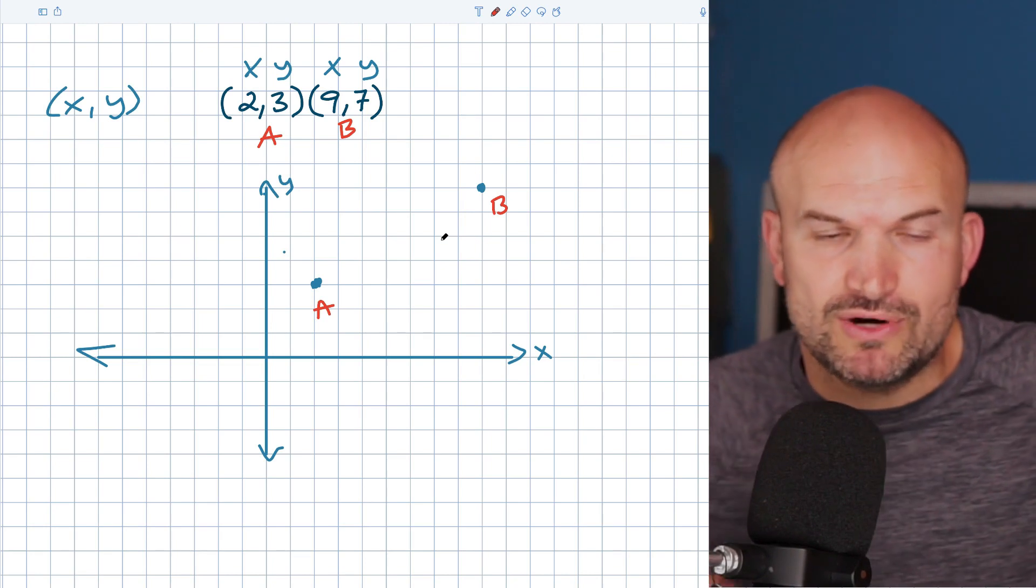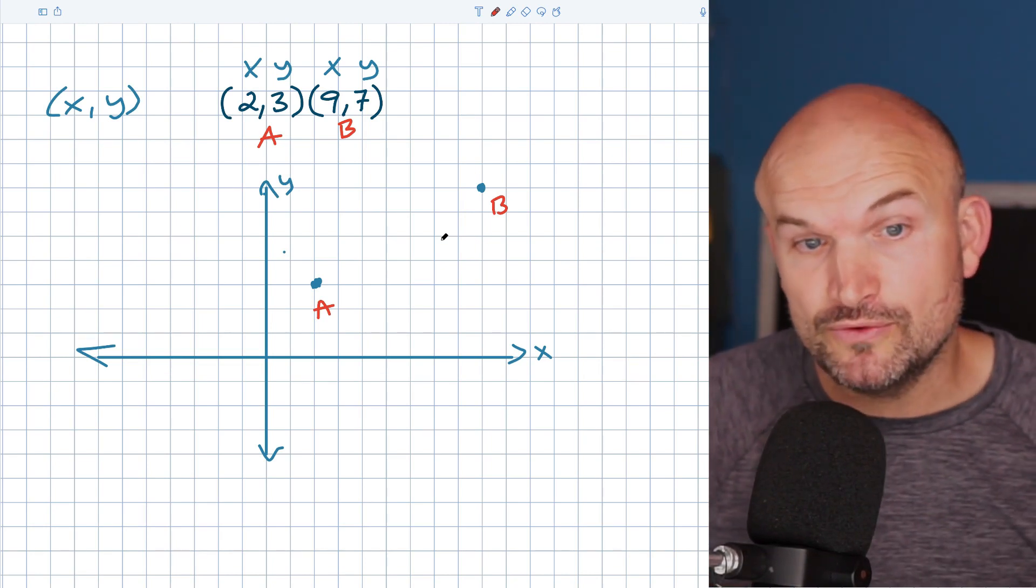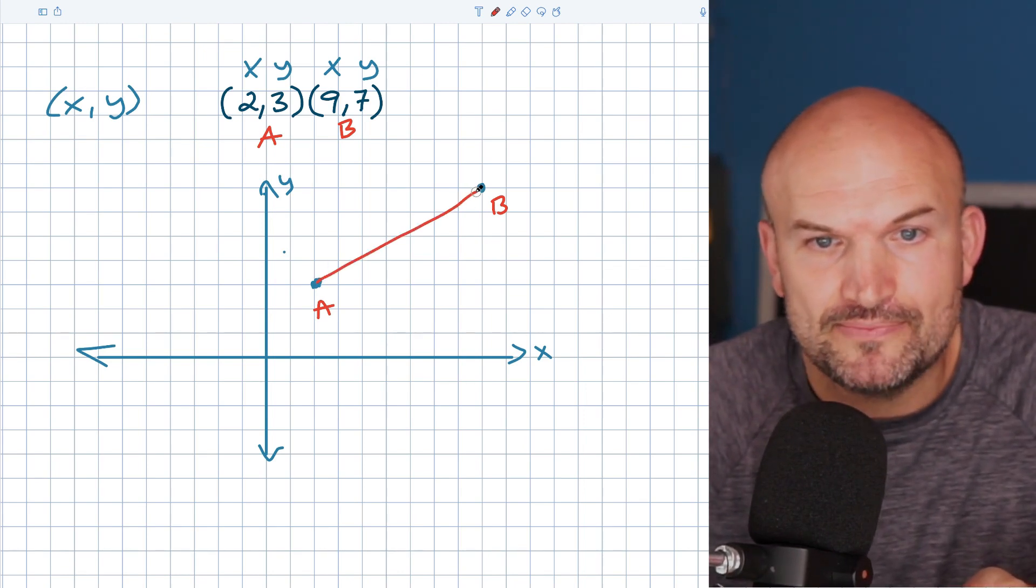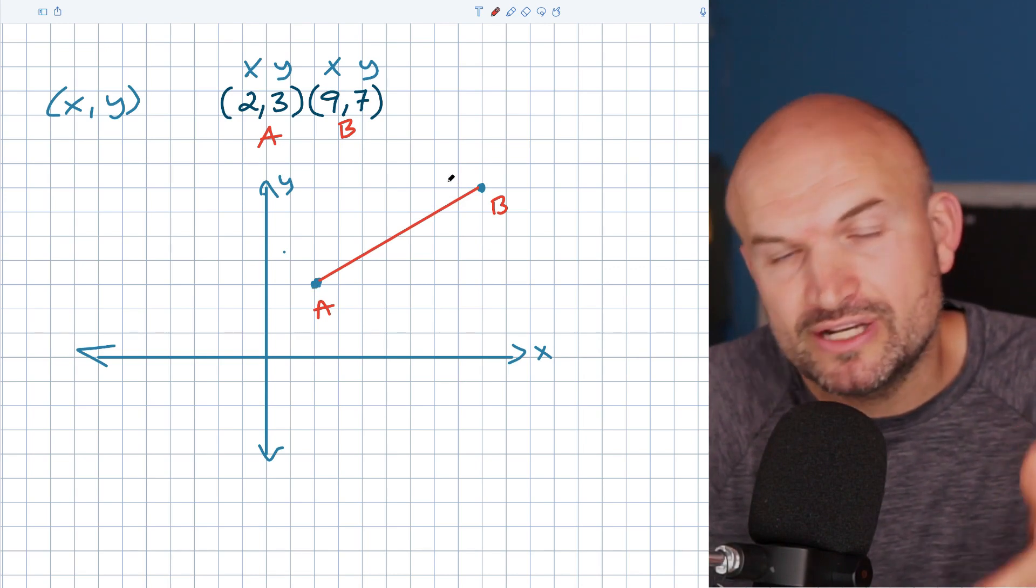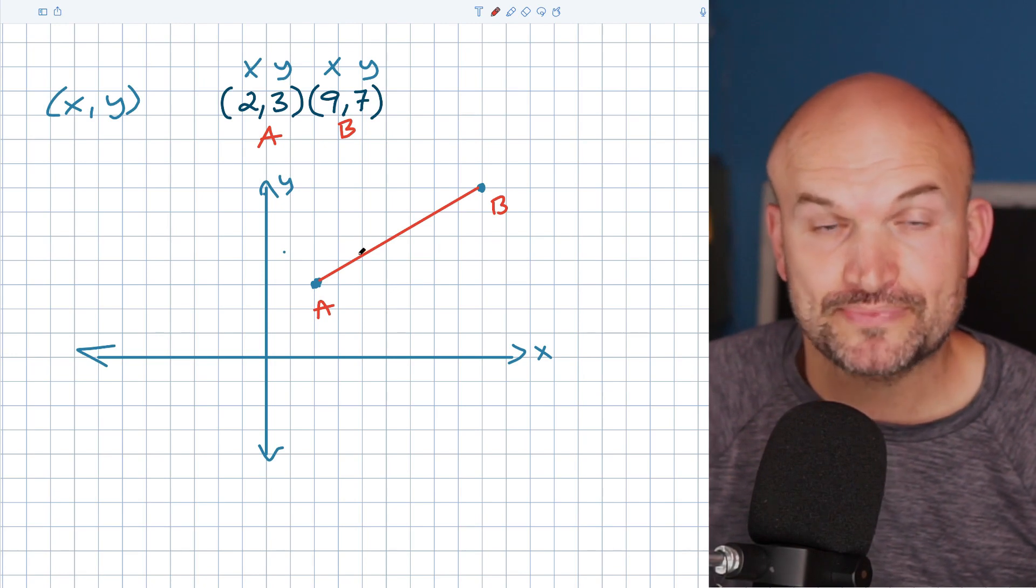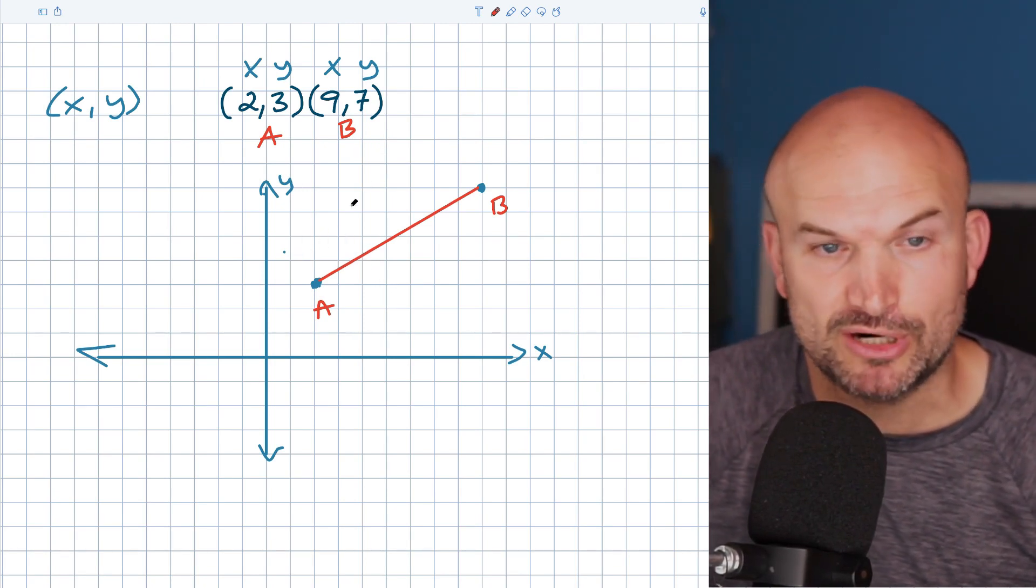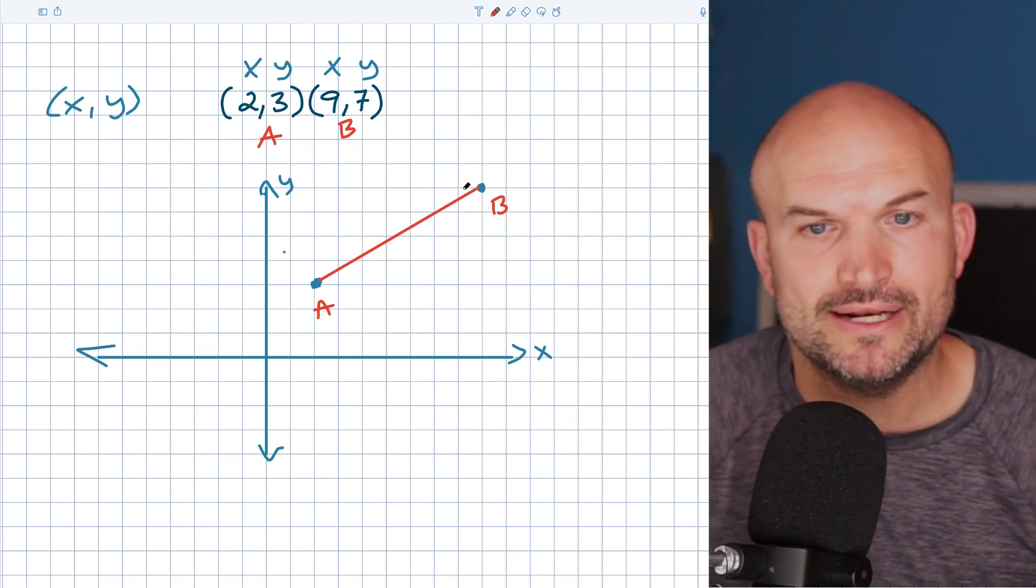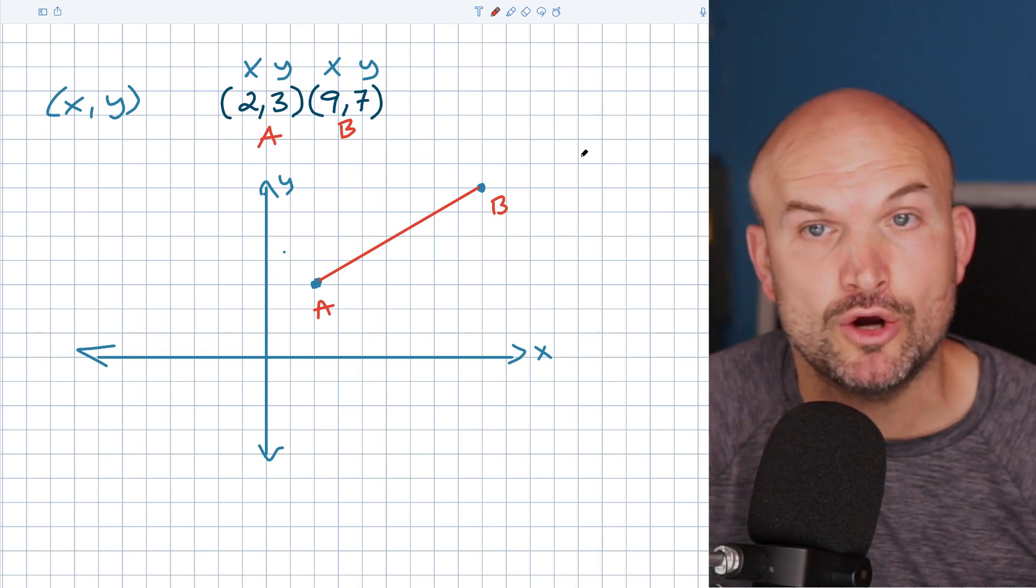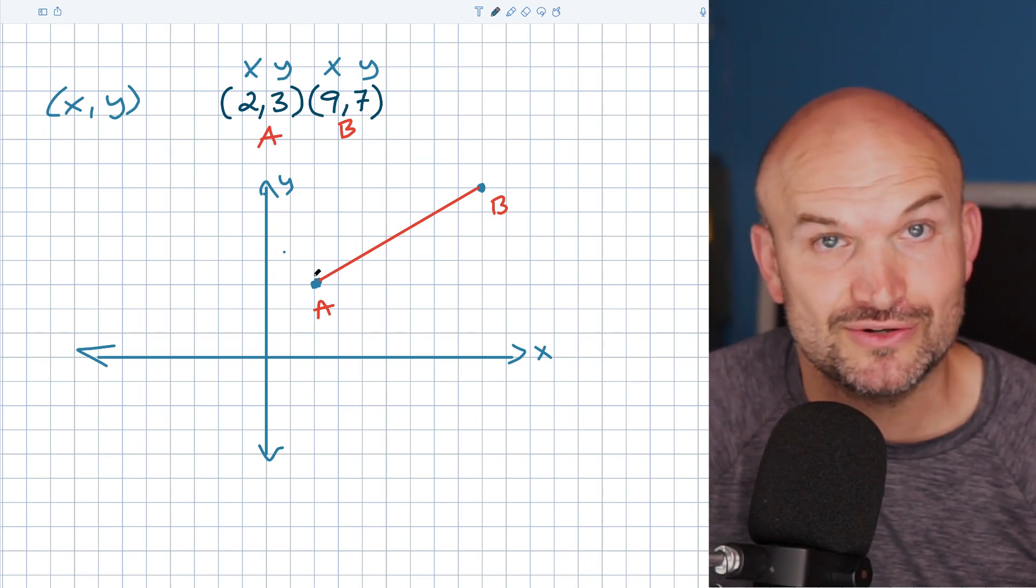Because when we're trying to find the slope, what we're trying to identify is the change that we need to go through - the change in our X and our Y coordinates - to go from A to B. Now you could say the change from A to B, or you can say the change from B to A. It doesn't really matter. For the sake of simplicity in this video, I am going to show you both ways, but I'll start with going from A to B. Because these are not the same coordinate points, you can agree to go from A to B, we need to go up and we need to go over. Well, how far up and how far over?